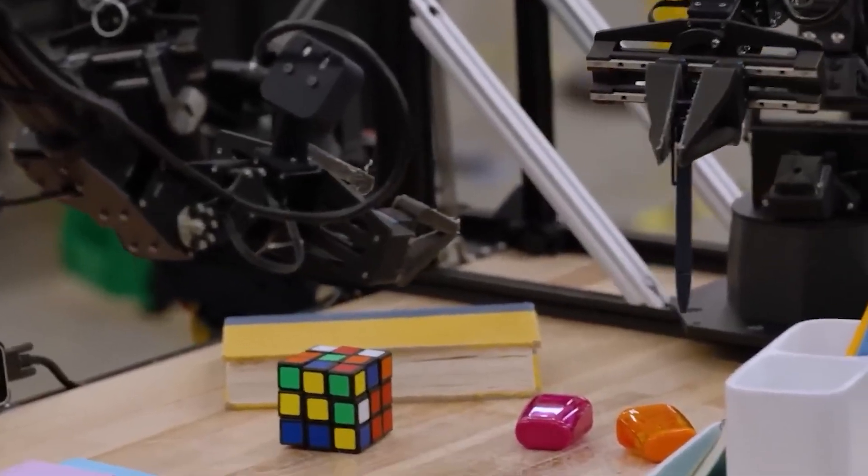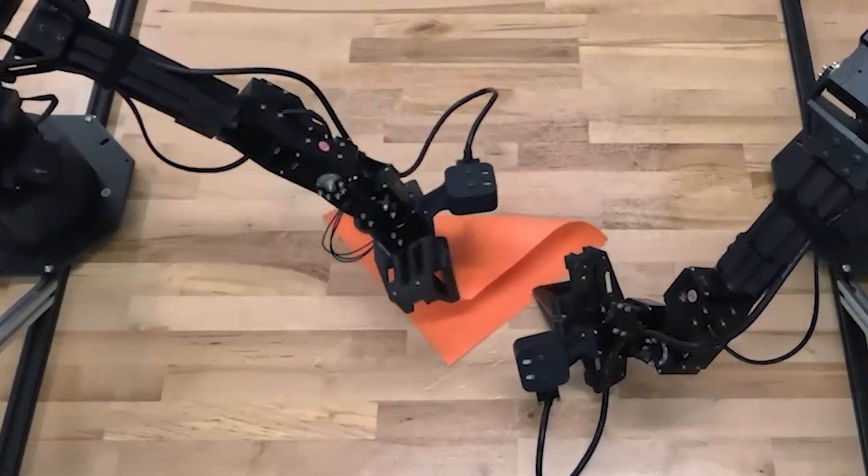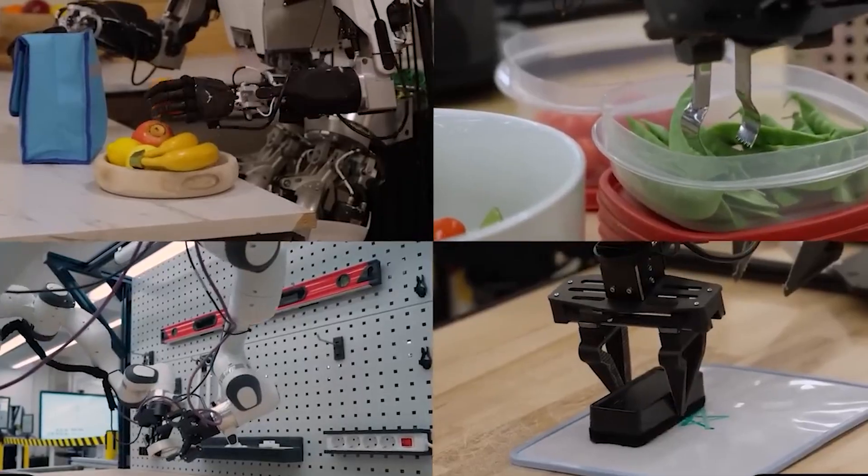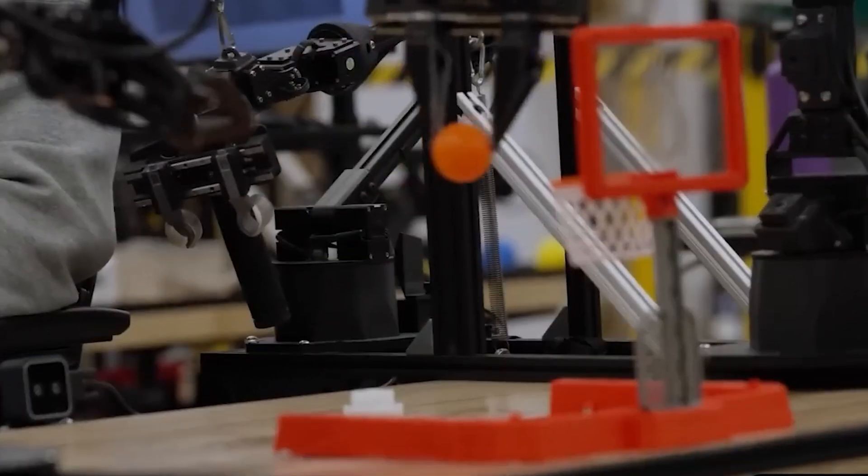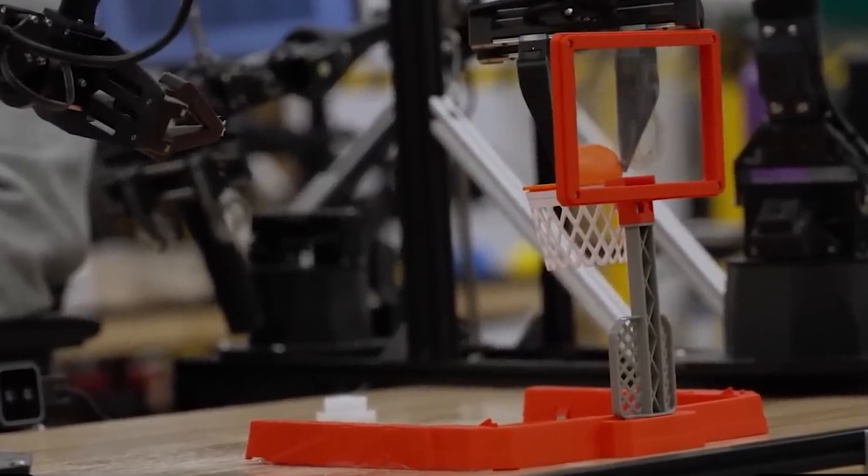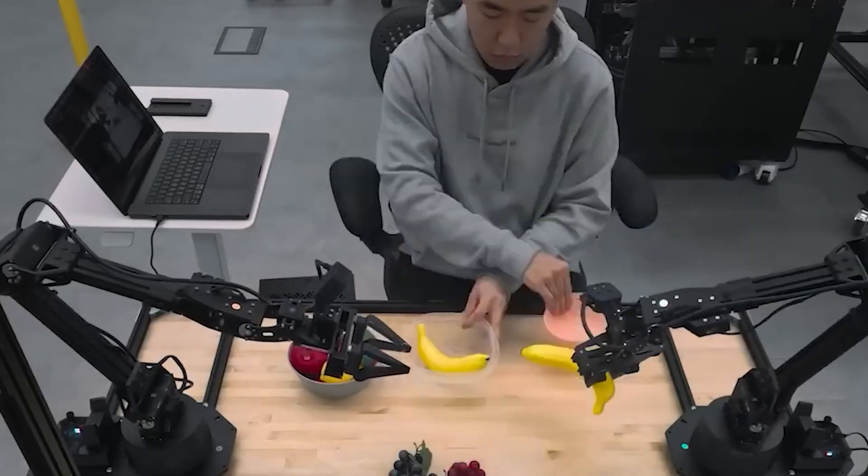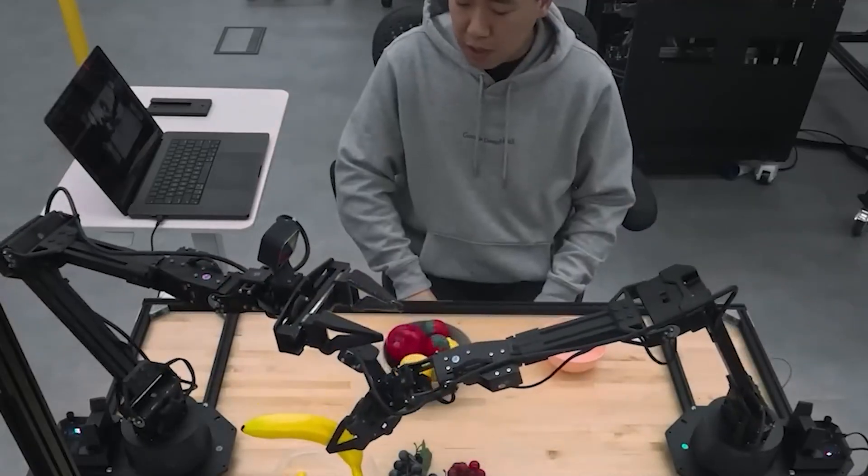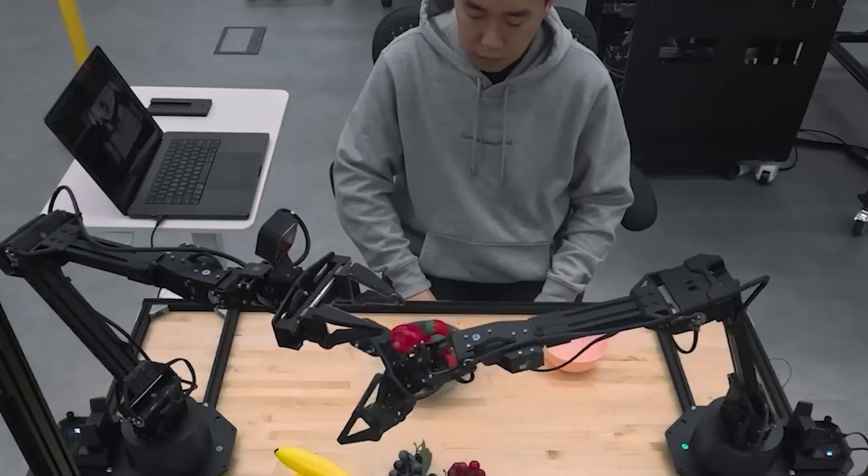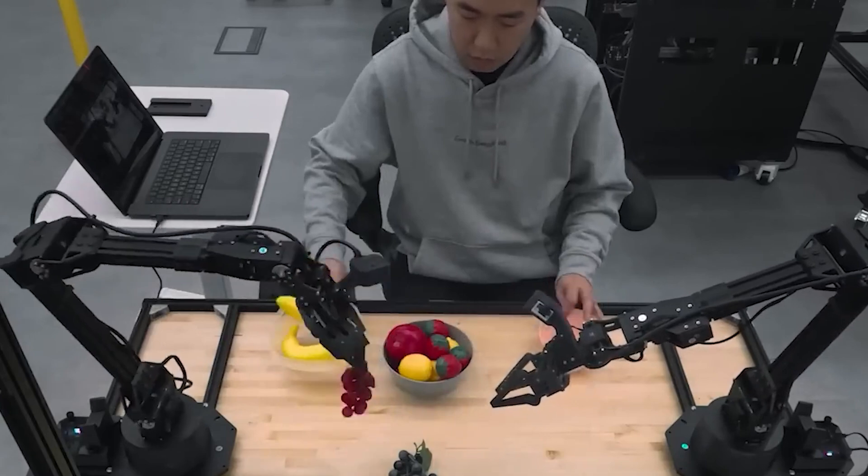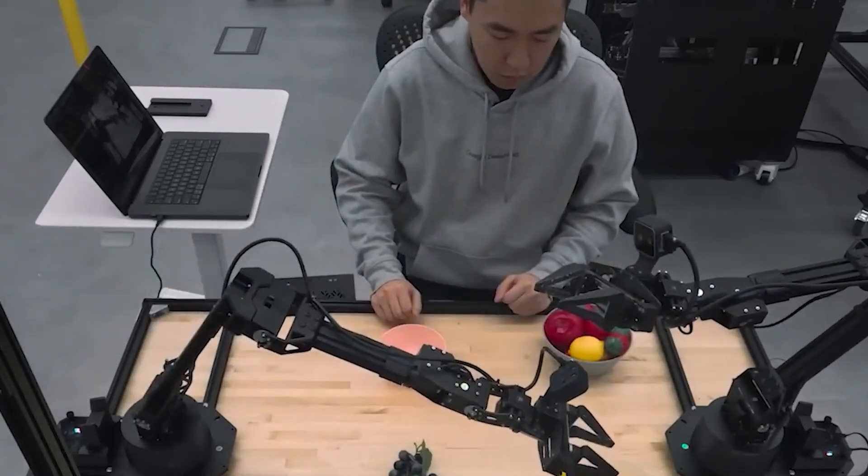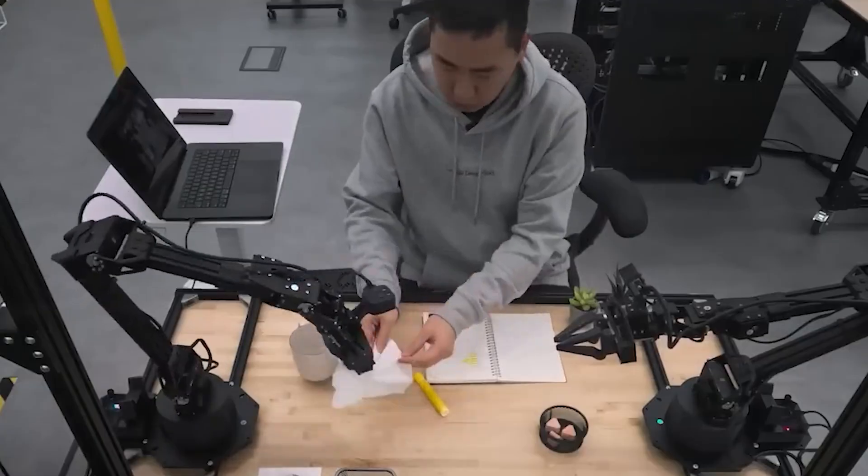In demonstration videos, these robots are shown folding paper into origami shapes, packing items into lunchboxes, carefully handling fragile objects, and even performing basketball slam dunks when verbally instructed. And here's the crazy part. When someone moves an object mid-task, the robot notices and adjusts immediately. When instructions change, it adapts on the fly. It's continuously monitoring its surroundings, just like you and I do without thinking.